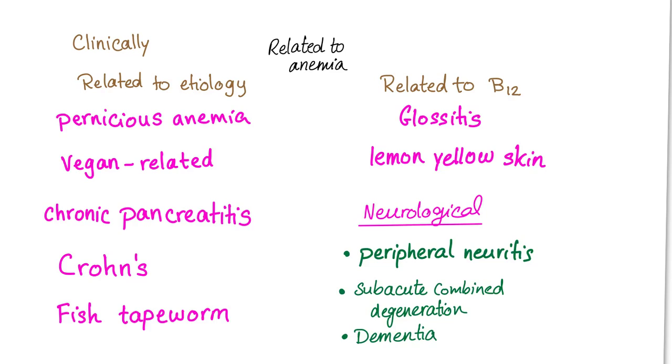What's the most common neurological sequelae? It's peripheral neuritis. What's the most dangerous? Subacute combined degeneration of the spinal cord. Also, you can get dementia. Keep in mind, you can have neurological symptoms in vitamin B12 deficiency without symptoms of anemia. So please keep that in mind.